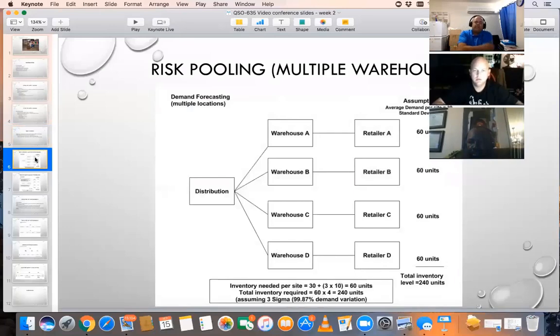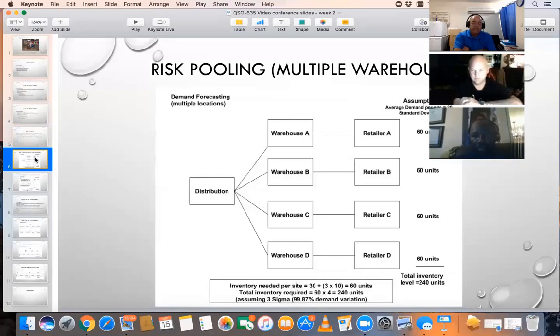First example, let's say we have multiple warehouses, and we have four retailers that are fed by four separate warehouses. In this example, average demand per site is 30, and the standard deviation is 10. Let's say that we want to ensure that we could provide products to 99.8% of the expected demand, so that would be three sigma from the mean. The inventory required for each site would be 30 plus the three sigma worth of standard deviation, so it would be another 30.